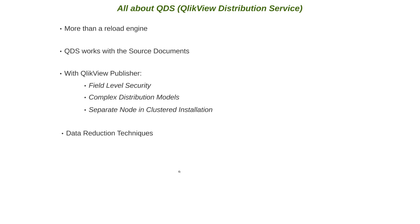Let's understand the difference between static and dynamic data reductions. In static data reduction, which uses loop and reduce, publisher reduces data and creates a new QVW file with a subset of data. For a fictitious example with Amazon sales data: if an Amazon corporate user wants to view the sales data, they would view the overall sales data. But the head of Amazon UK or Amazon Australia would only want to see data for their respective regions. This is a classic case for loop and reduce. In this case, one QVW file in source documents will be distributed as three QVW files in user documents.